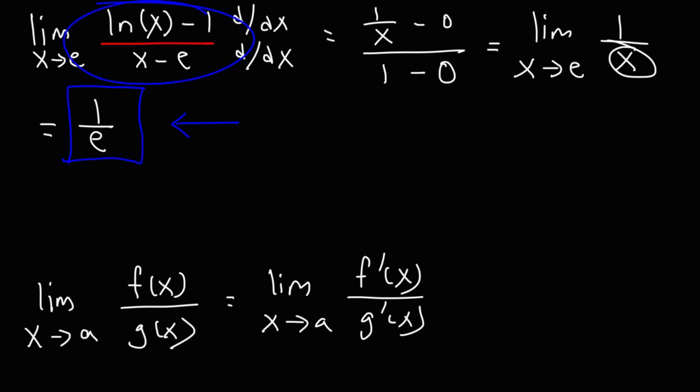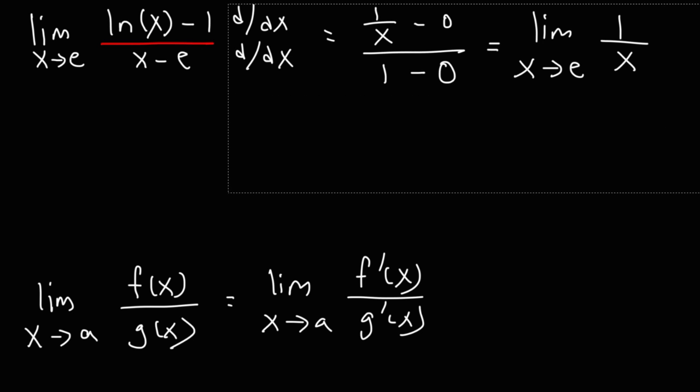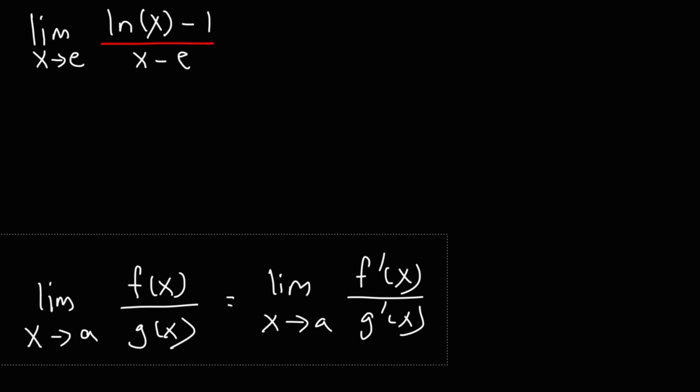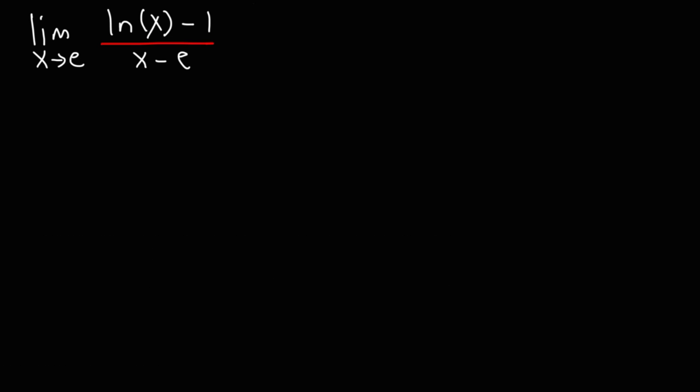Now, we can check our answer just to make sure that it is indeed the right answer. So this entire answer is 1 over e. Let's get the decimal value of that. 1 over e is equal to 0.3678794412.